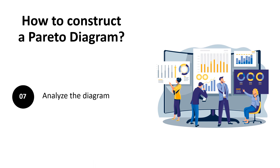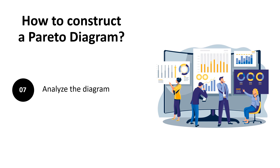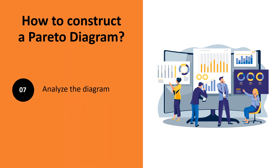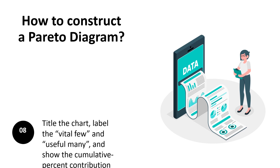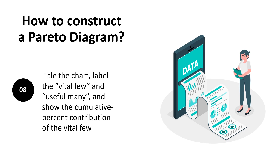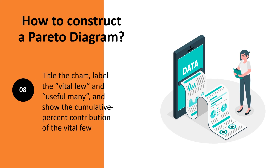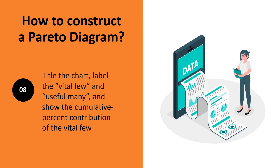The seventh step is to examine the diagram and look for a breakpoint on the cumulative percentage graph. In the final step, write the title of the chart, label the essential few and useful many, and display the vital few's cumulative percentage contributions.